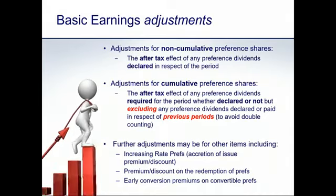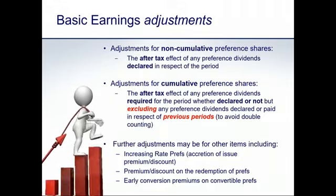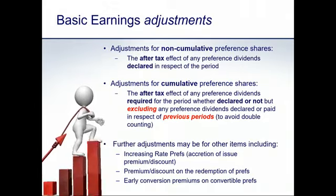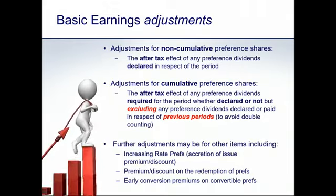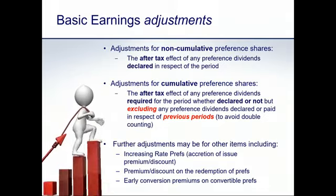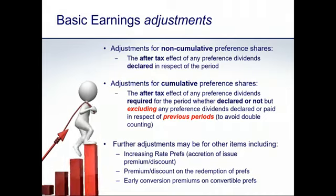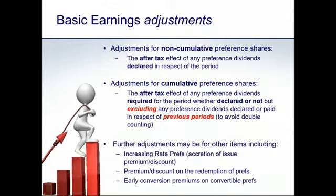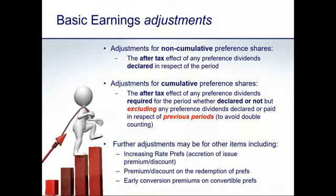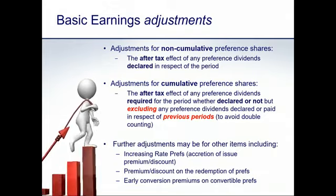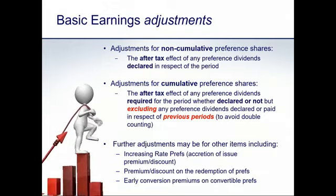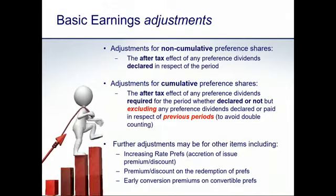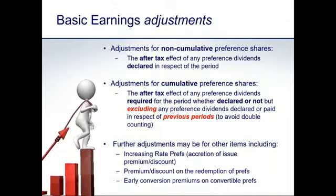For cumulative preference shares, we make the adjustment irrespective of whether the entity has declared or intends to pay a dividend, but dividends relating to previous periods are excluded from the current period's adjustment. For non-cumulative preference shares, we only adjust if dividends have been declared. For cumulative preference shares, the adjustment is made regardless of declaration intent, because they are effectively entitled to dividend participation for each period.